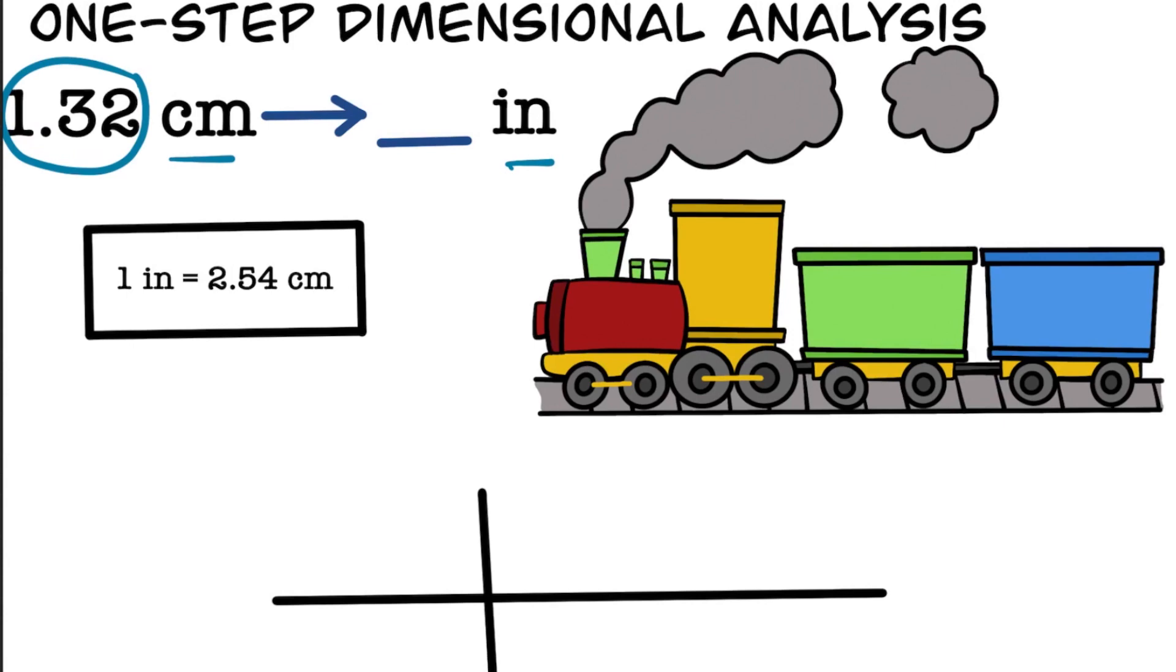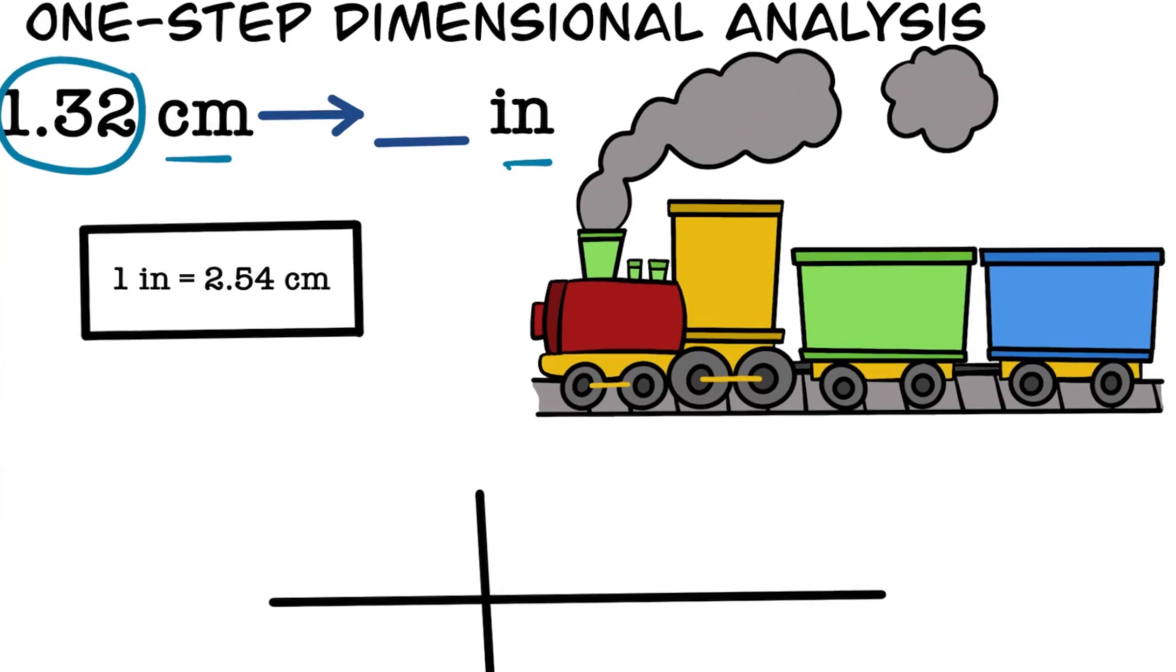Third, we list out all the metric conversion facts that we can use to get us from the starting unit to the ending unit. These are called your conversion factors. In this case the starting unit was centimeters and the ending unit is inches. The metric fact that gets us here is 1 inch equals 2.54 centimeters.